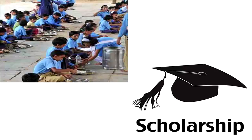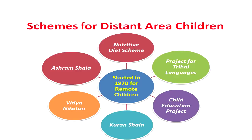Nutritive diet and scholarships are provided to economically backward children in the state of Maharashtra. Now the schemes for distant area children — those schemes launched by the state of Maharashtra for children belonging to distant areas were started in 1970 for remote area and backward area children. These schemes included the nutritive diet scheme, the project for tribal languages, the child education project (K project), then Kuranshala, Vidya Niketan, and Ashram Shala scheme — six schemes launched for the education of distant area children.